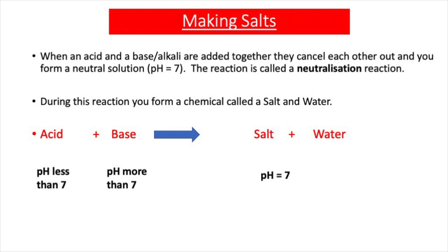In our previous lessons we learnt that acids are substances that split up into H⁺ ions or protons when put in water, and that the opposite of an acid is called a base. If that base dissolves in water it is classed as an alkali. When an acid and a base or alkali are added together they cancel each other out, forming a neutral solution — a neutralization reaction.